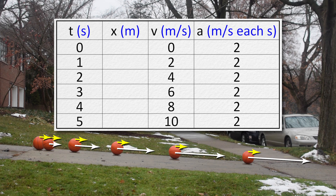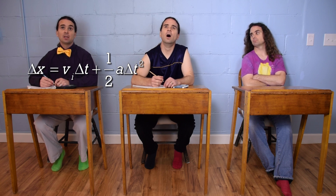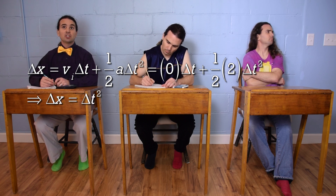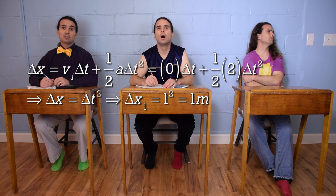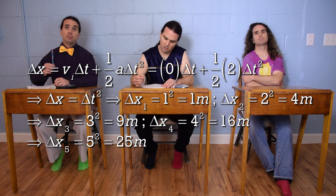Now let's make a table out of these data. The only data we are missing are the positions. Let's assume the initial position is zero. Billy, now we may use a uniformly accelerated motion equation to determine all those positions. We can use: displacement equals velocity-initial times the change in time plus one-half times the acceleration times the change in time squared. The velocity initial is zero and the acceleration is two, so displacement equals the change in time squared. So: one squared is one, two squared is four, three squared is nine, four squared is sixteen, and five squared is twenty-five — those are all the positions in meters.